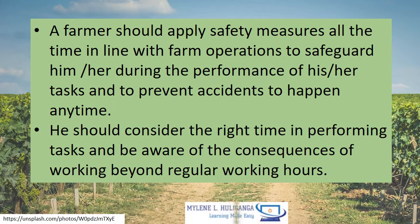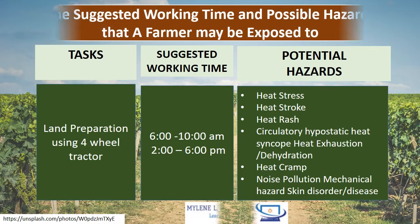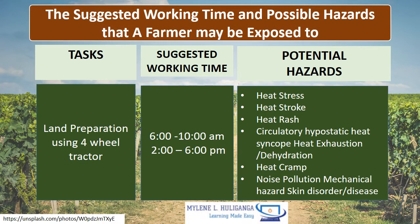A farmer should apply safety measures all the time in line with farm operations to safeguard him or her during the performance of his task and to prevent accidents from happening. He should consider the right time in performing tasks and be aware of the consequences of working beyond regular working hours. Here are the suggested working times and possible hazards that a farmer may be exposed to.